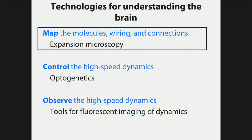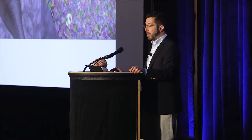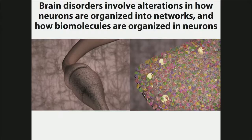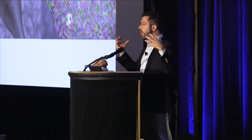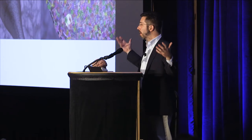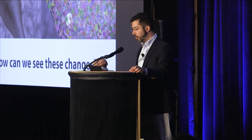Today I want to focus on the question of how do you make maps of the brain from molecule to cell to circuit to brain. Brain diseases involve alterations in how brain circuits are made — neurons with different wiring than you might want. And within those neurons you can think of the neuron as a network of molecules. So how can you see how molecules are arranged in neurons, and how neurons are arranged in networks, and how these go wrong in disease states that we don't understand?